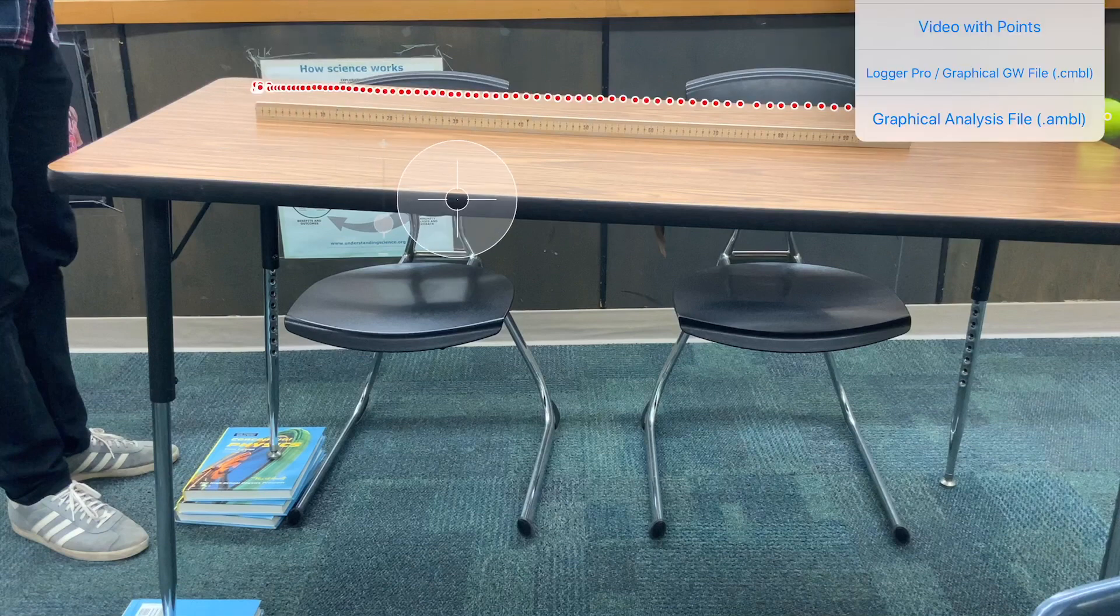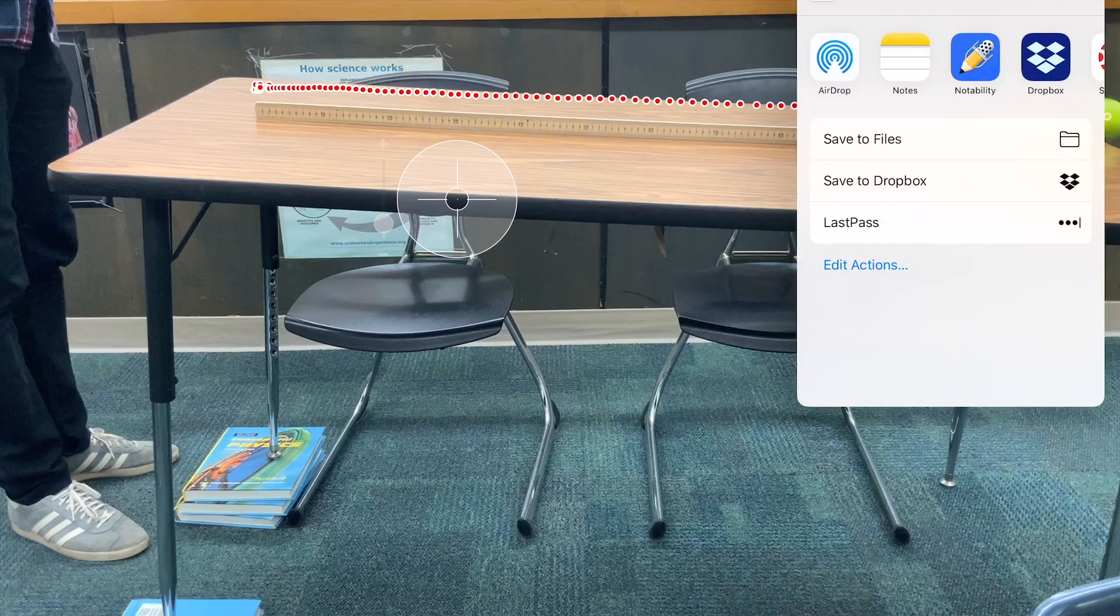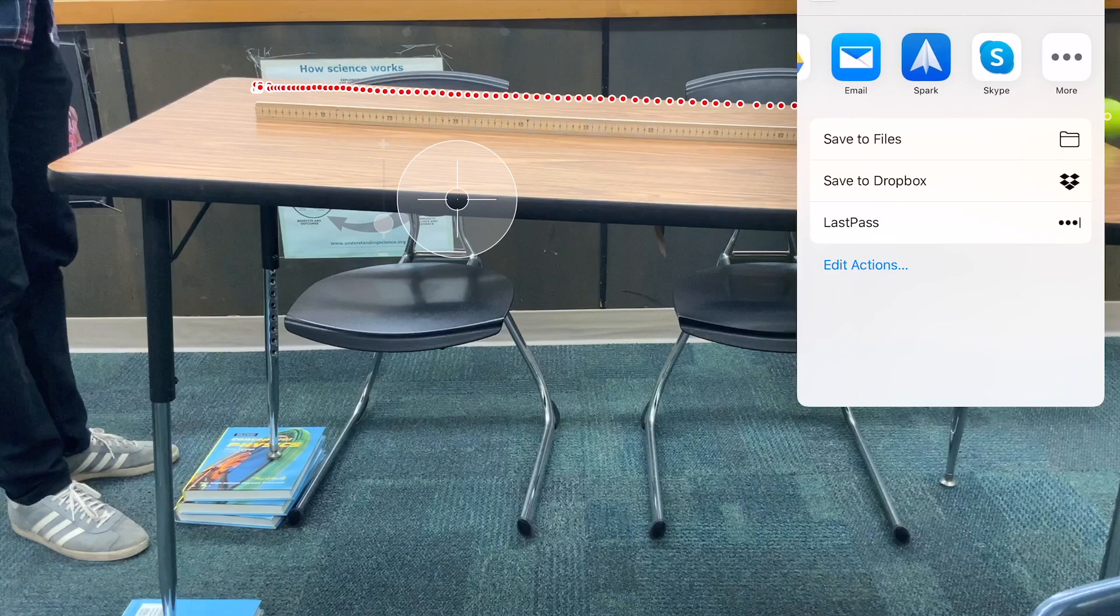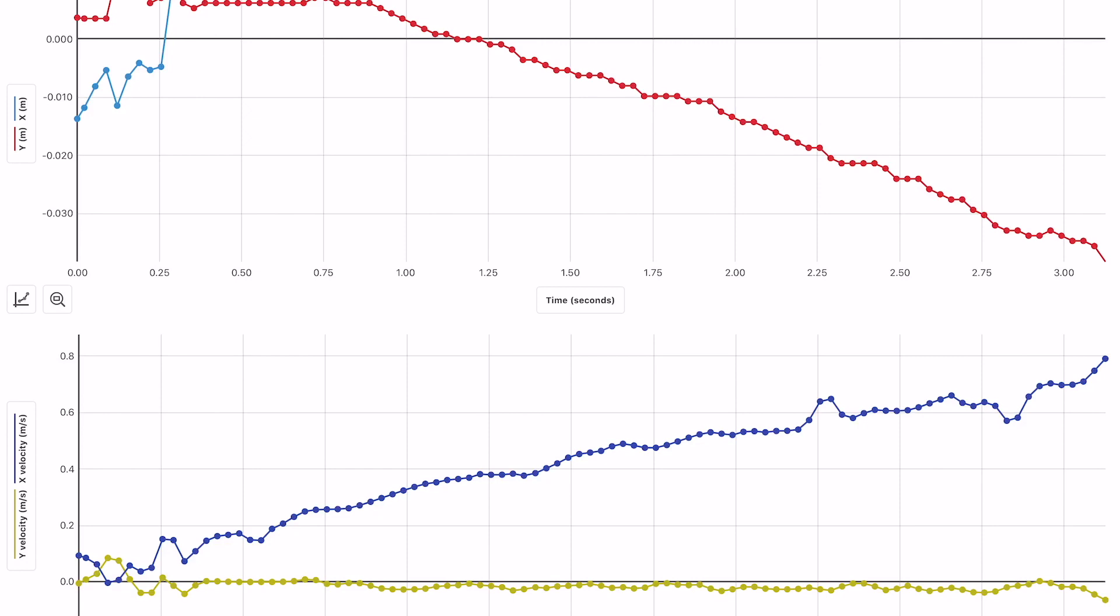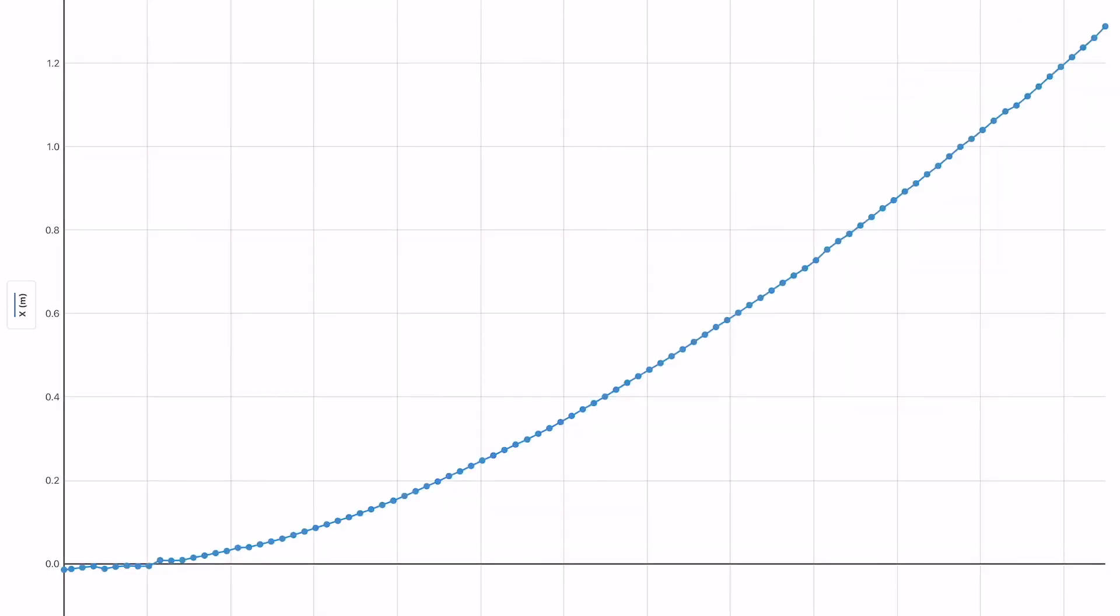So just like last time, I'm going to export this into the graphical analysis app. I'm going to open it and copy it over. And so now I have these new graphs. I don't want the vertical position here. And so if I expand that, I get this curve. It's like a quadratic, right?